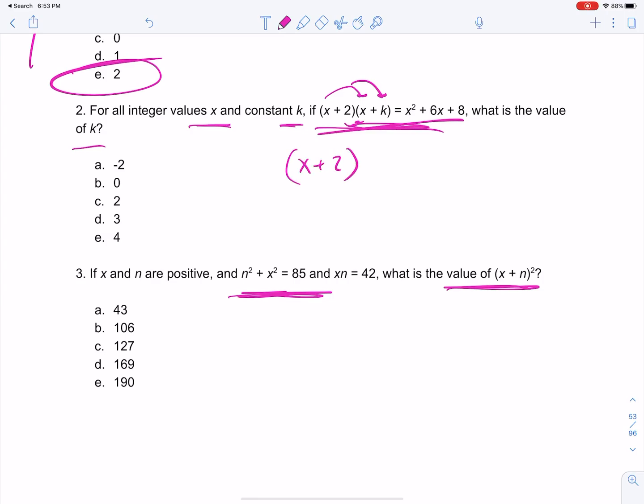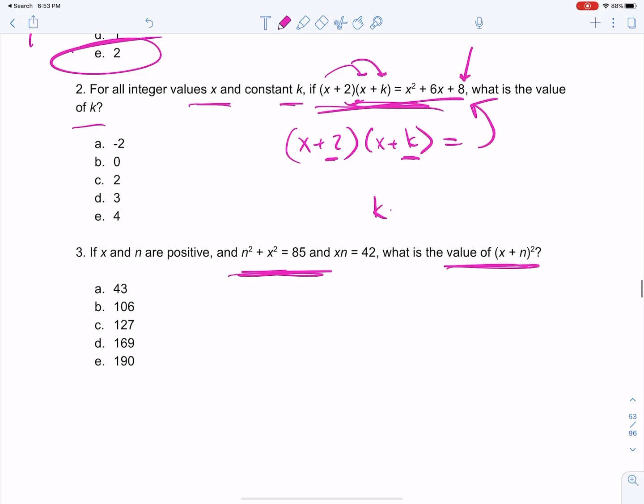x plus 2 times x plus k has to equal this up here, right? Well, 2 times what gives us 8? Only one thing. k has to be 4. And if you took the time to FOIL this out, you would find out that it's true, but it has to be true, because only 2 times 4 would give you 8, and it's the only one of the answer choices that would multiply to work that out.